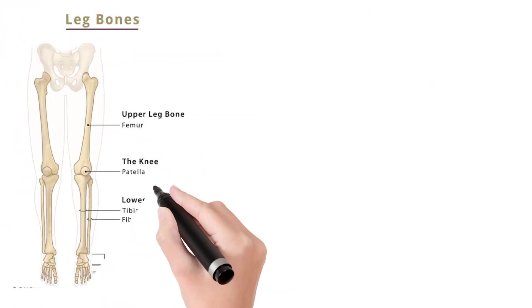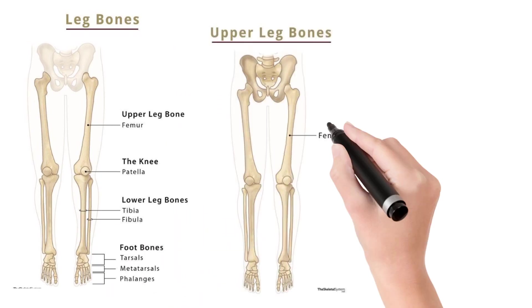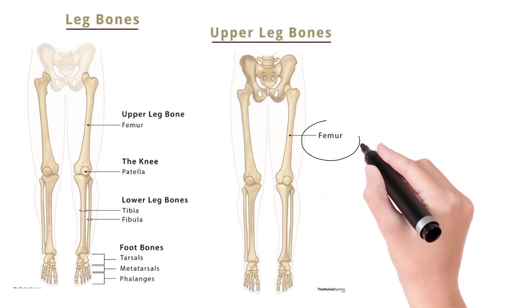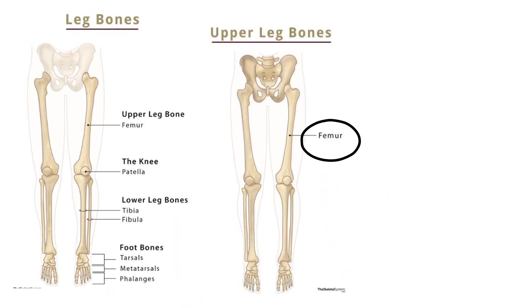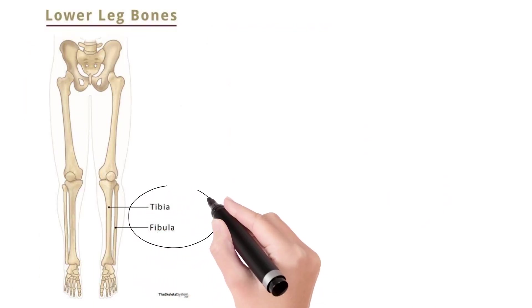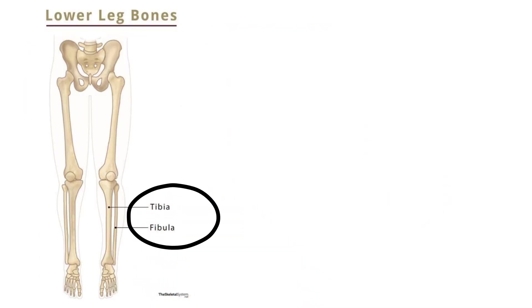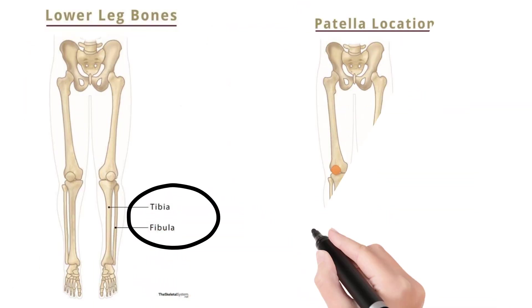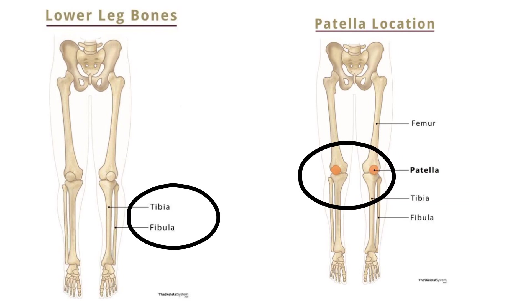Coming to the legs, the bone above the knee is called the femur — this is one bone. In the knee there is a bone called the patella, which is the kneecap.